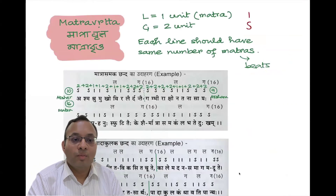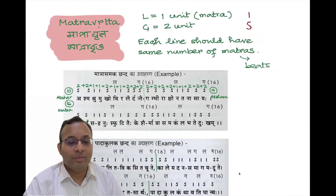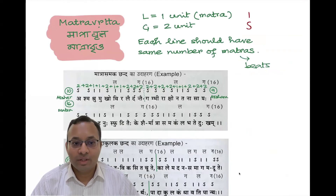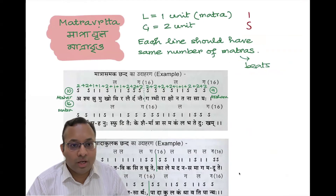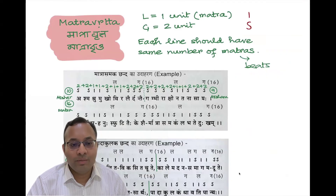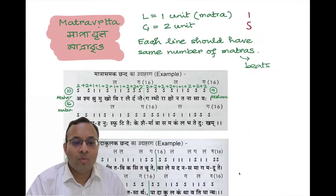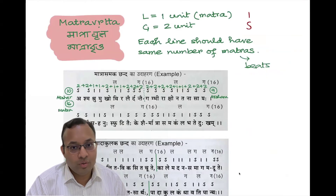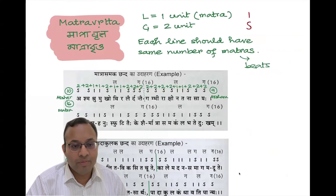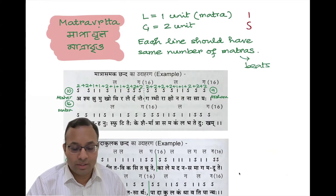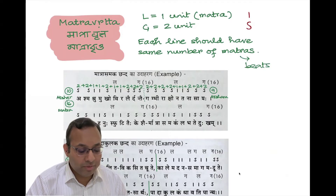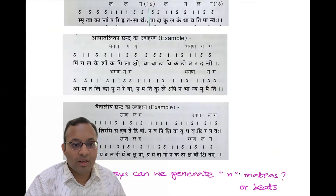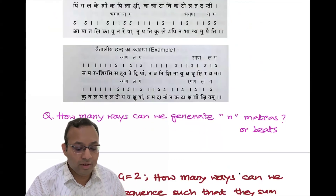The next type of Chanda — Matra Vrtta — is more interesting and directly leads to dynamic programming. Here, we don't focus on the number of Akshars but on the Matra: how many units of time are needed. Laghu is one Matra (one unit to pronounce) and Guru is two Matras (two units). If each line of a verse has the same total Matra count, the rhythm is consistent. Types include Matrasamak, Padakulak, Apatalika, and Vaitaliya in Pingala's work.